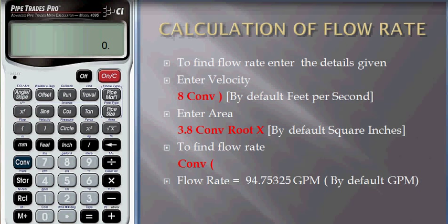Let's calculate flow rate first with the velocity and the area. Enter the velocity 8, press convert, press close bracket symbol. You can see the velocity button above that, so it will store as 8 feet per second by default.